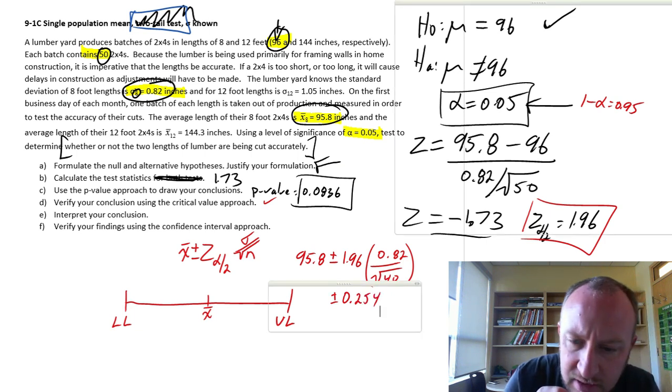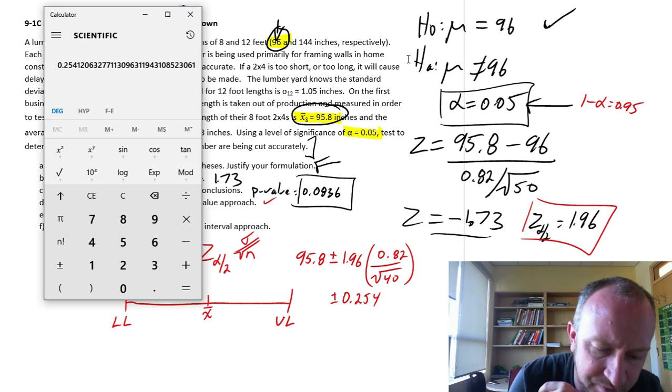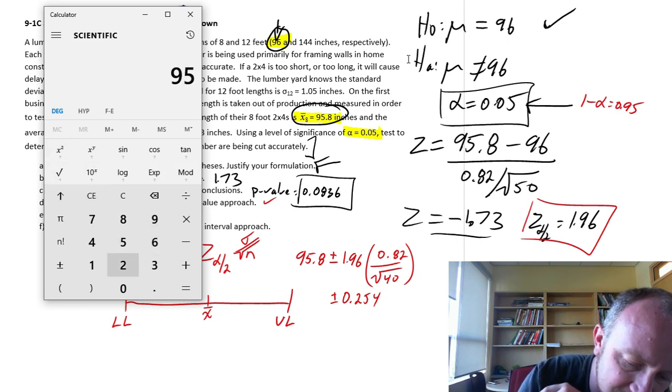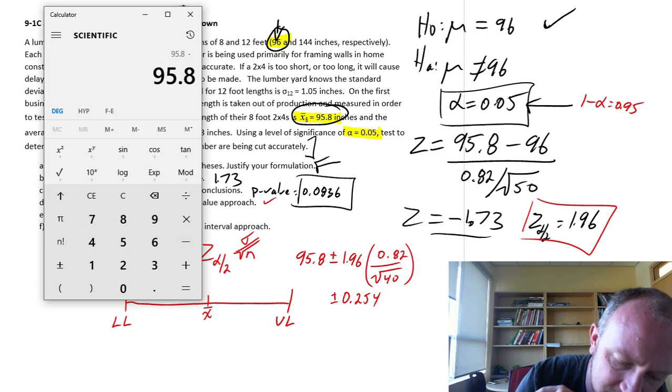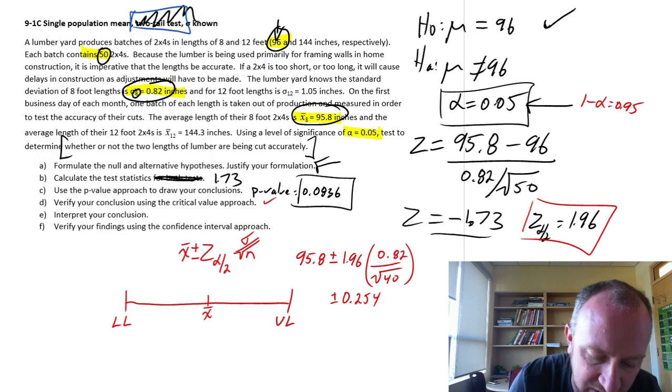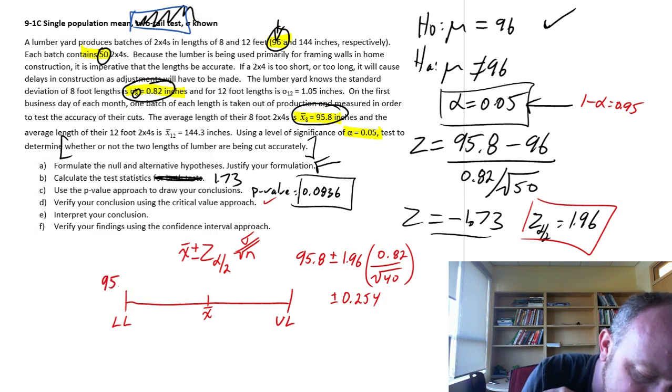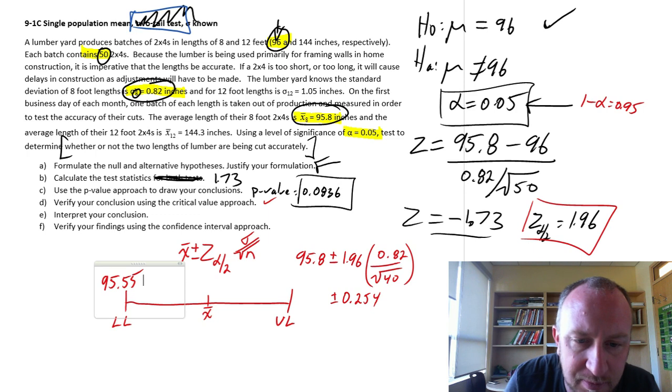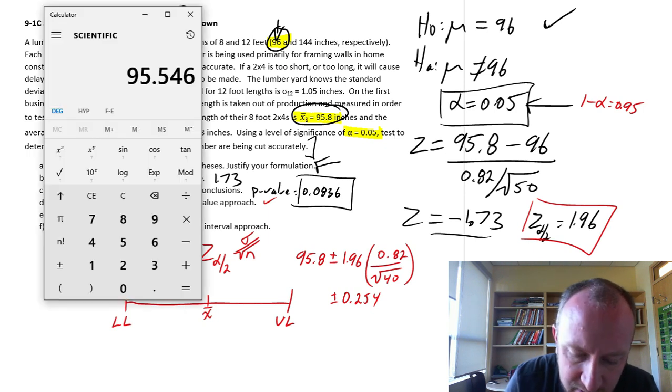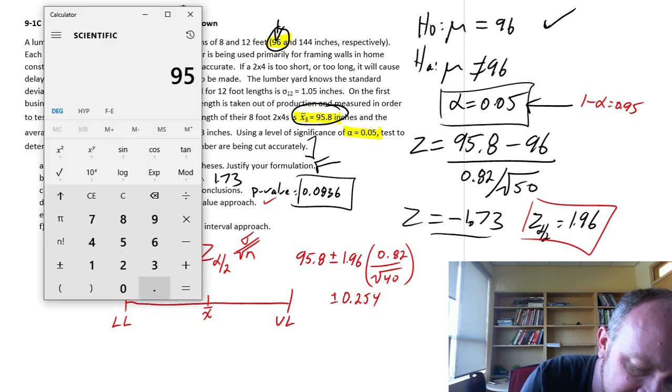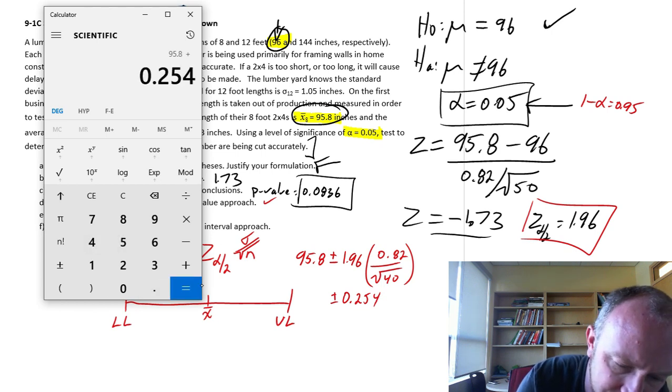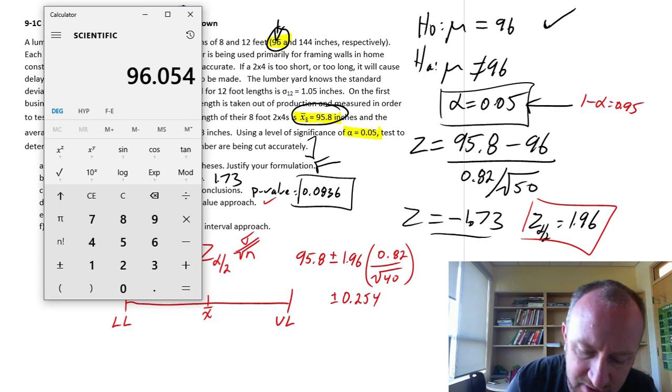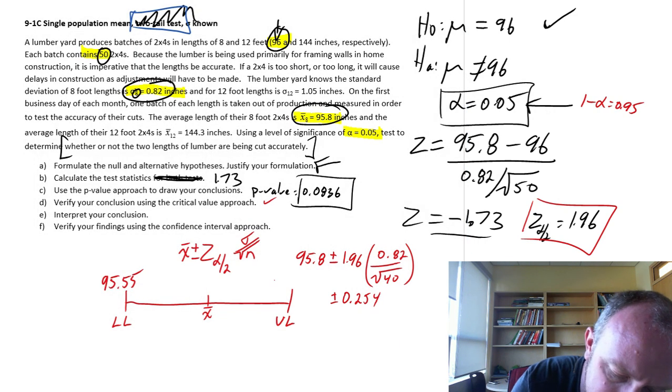Now, I'll calculate the limits. So the lower limit is going to be 95.8 minus 0.254. So that's 95.55. 95.55. And the upper limit, 95.8 plus 0.254. 96.05. 96.05.